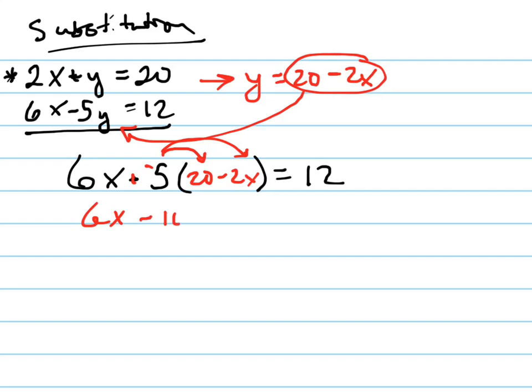So let's write it out. 6x minus 100 plus 10x equals 12. Now let's add like terms, 16x. Let's add 100 to both sides equals 112.